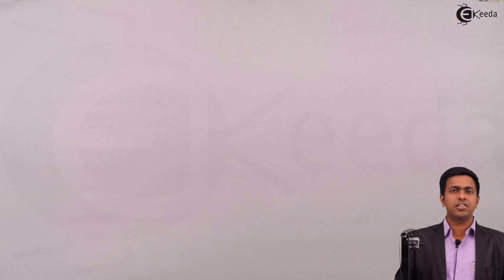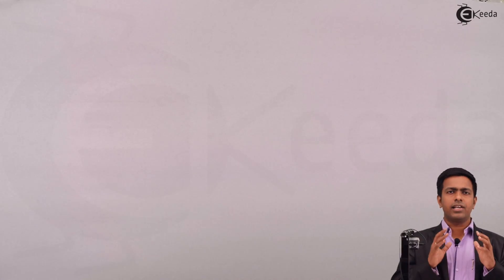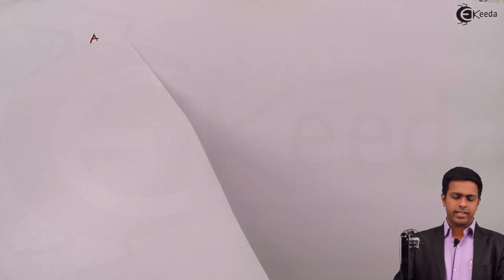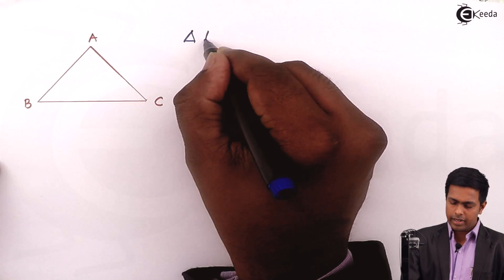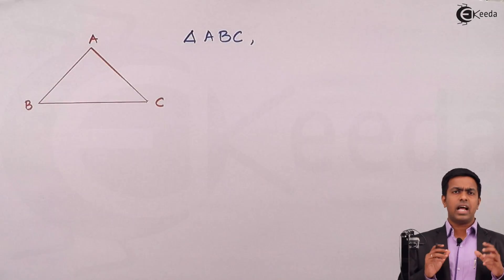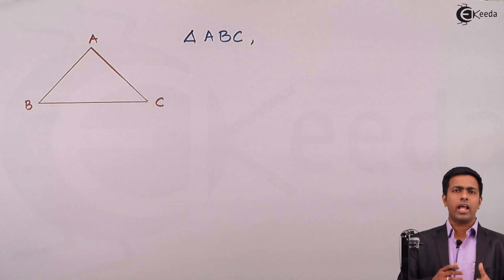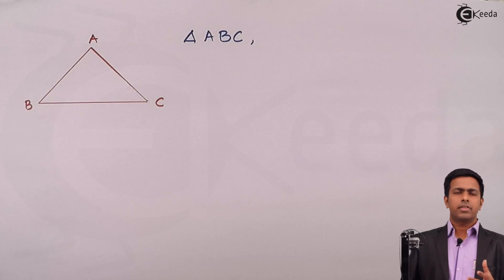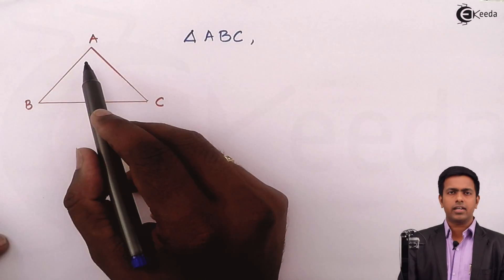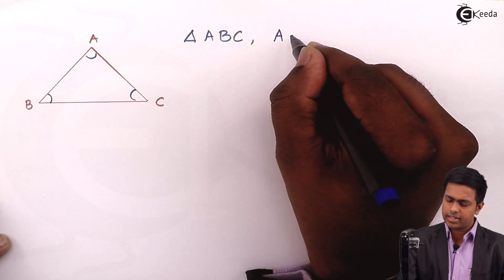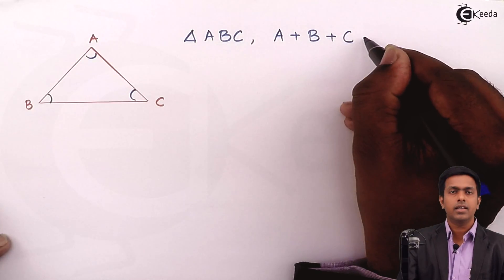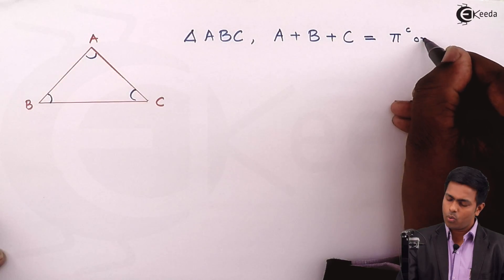Hello students, in this video we are going to learn a new concept of trigonometric functions — that is angles of triangle. Let's consider a triangle ABC. We know that in any triangle the sum of all angles is equal to 180 degrees, that is pi radians. So we have three angles A, B, and C, and A plus B plus C is equal to pi radians or 180 degrees.